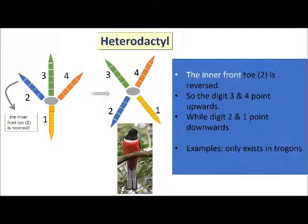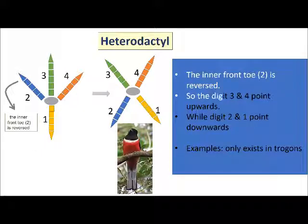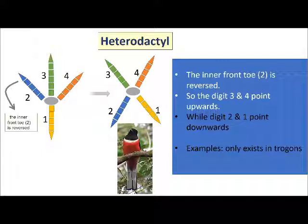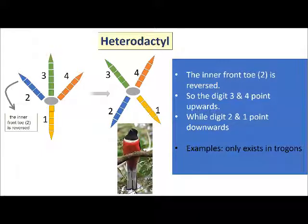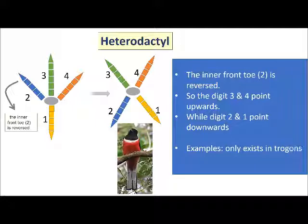In heterodactyl foot arrangement, the inner front toe, marked as 2, is reversed. So digits 3 and 4 point forward, while digits 2 and 1 point backward. Heterodactyl foot arrangement is found only in trogons.